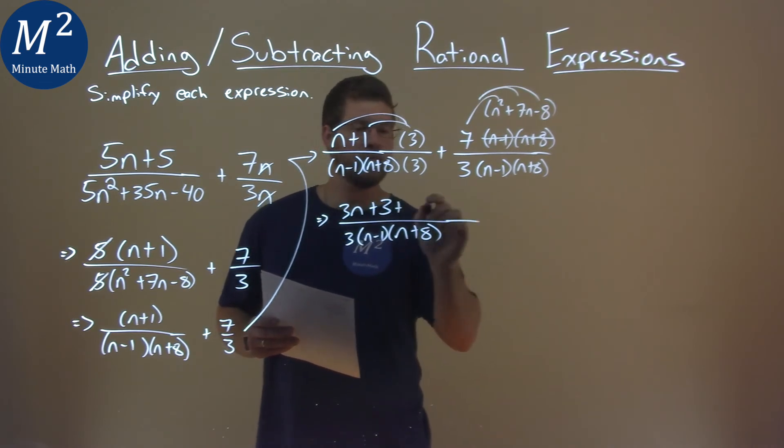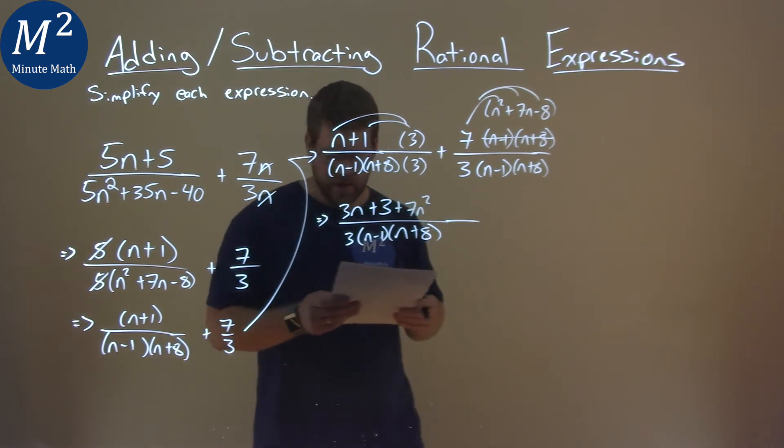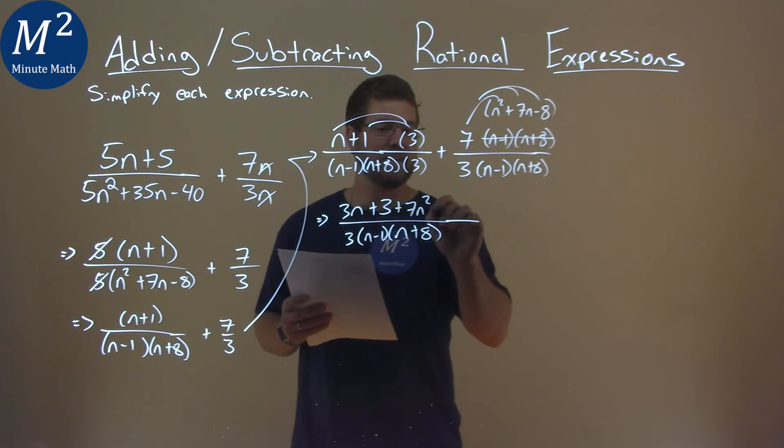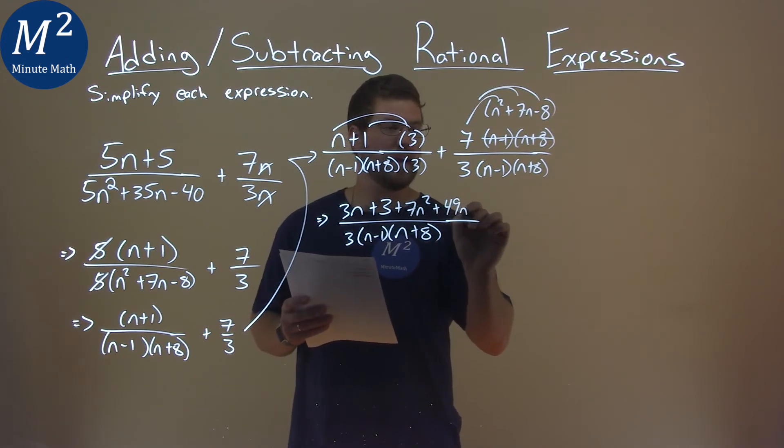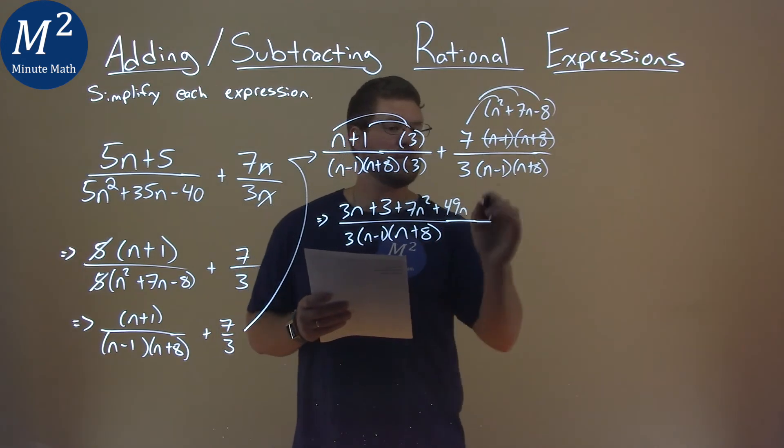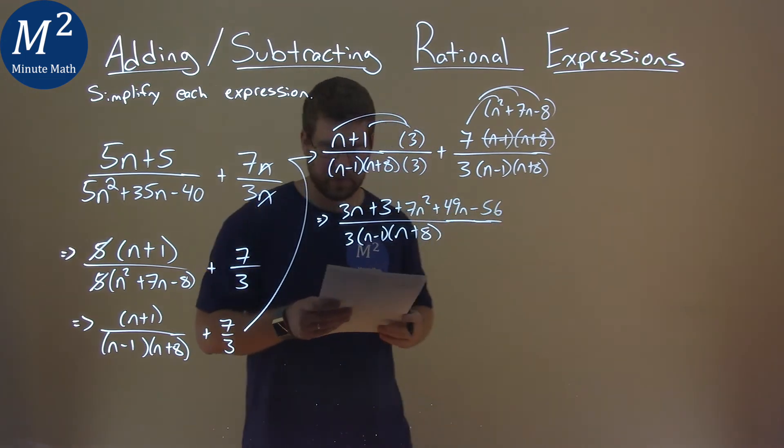So 7 times n squared is 7n squared. 7 times a 7n is a 49n. And 7 times an 8, subtract, we got 56 here.